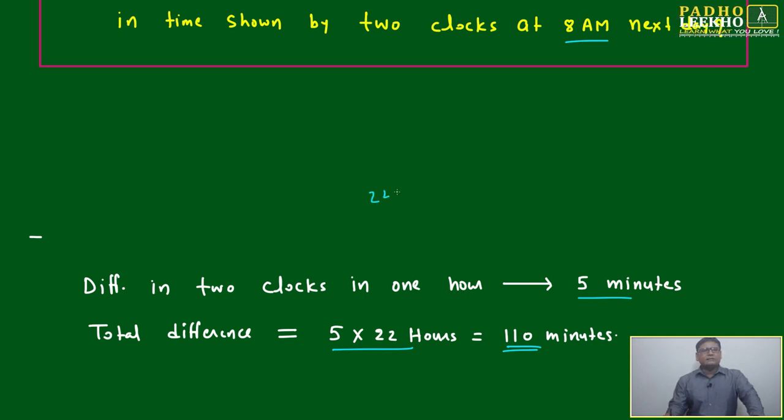If we have to find it, we can calculate: 22 into 2 plus 22 into 3. One will lose by 44 minutes, one will gain by 66 minutes. Who will gain will show extra time, who will lose will show behind.